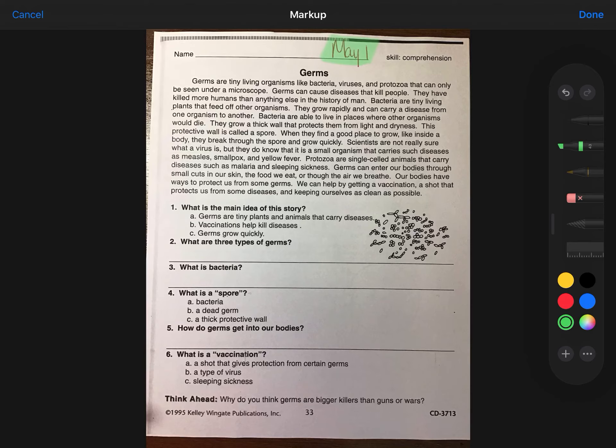Bacteria are tiny living plants that feed off other organisms. They grow rapidly and can carry a disease from one organism to another. Bacteria are able to live in places where other organisms would die. They grow a thick wall that protects them from light and dryness. This protective wall is called a spore. When they find a good place to grow like inside a body, they break through the spore and grow quickly.